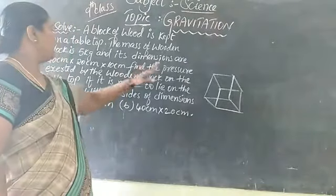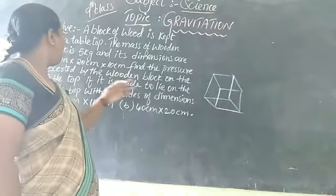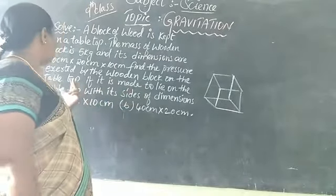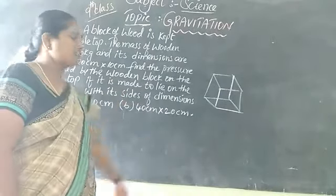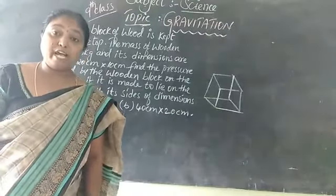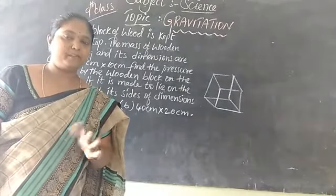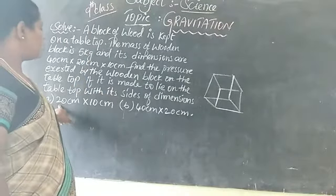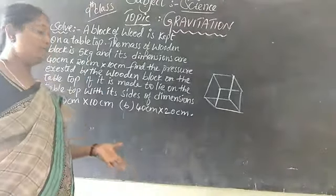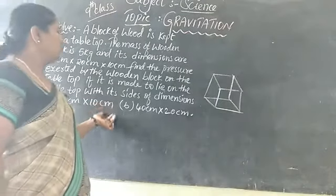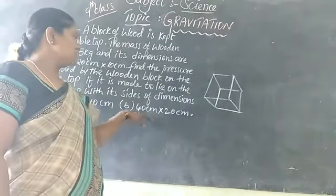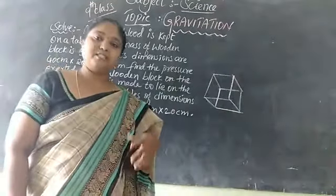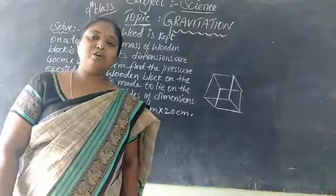Find the pressure exerted by the wooden block on the table top, and also when it is made to lie on the side of dimensions 20 cm by 10 cm, and then 40 cm by 20 cm. So this is our problem and we have to solve it.